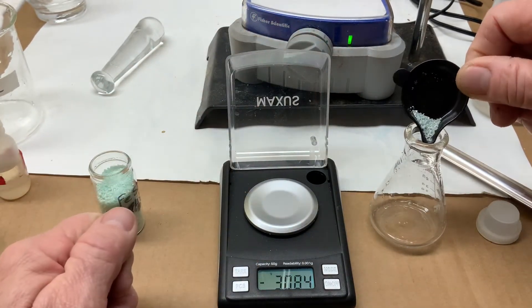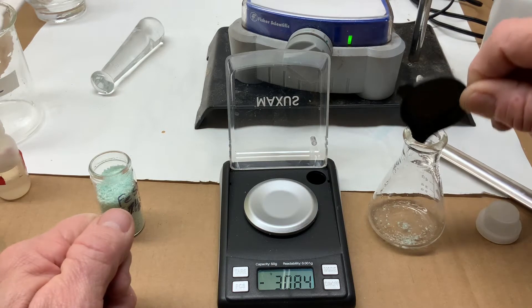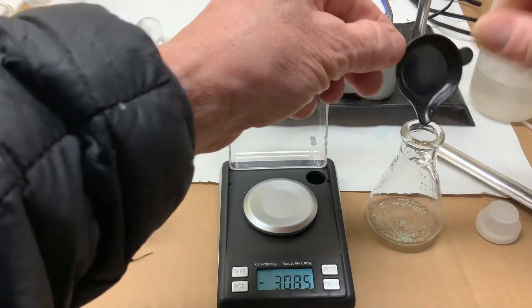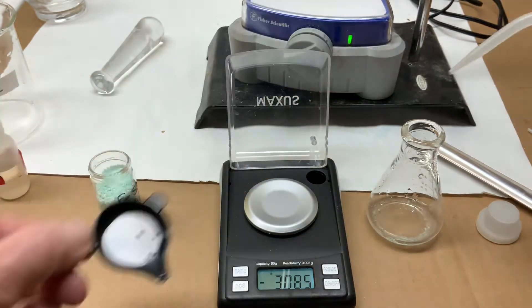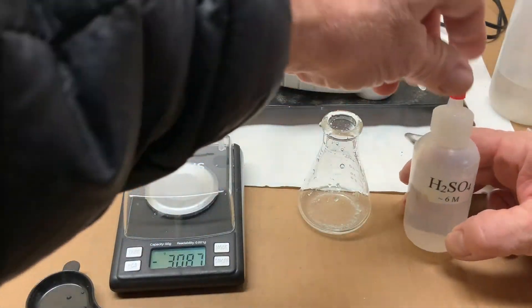Transfer the hydrate into the flask, using a squirt bottle to ensure that all of the bits of iron sulfate actually make it into the flask.